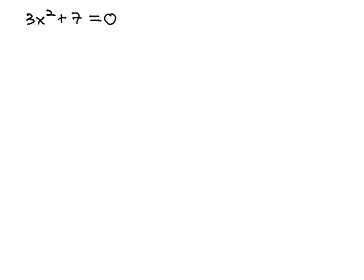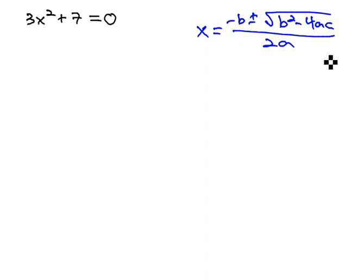In this video, we're going to solve the equation 3x squared plus 7 equals 0 using the quadratic formula, which says that x is equal to the opposite of b, plus or minus the square root of b squared, minus 4ac, all over 2a.